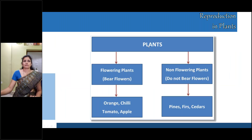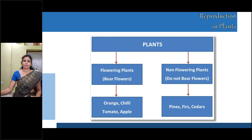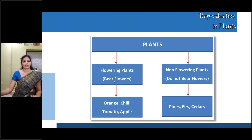As we have seen in our nursery, there are many plants. Did all the plants have flowers? No — some plants have flowers and some do not. Based on this, plants are divided into two: flowering plants and non-flowering plants. Flowering plants bear flowers — examples are orange, chili, tomato, and apple. Non-flowering plants do not bear flowers — examples are pines, firs, and cedars.